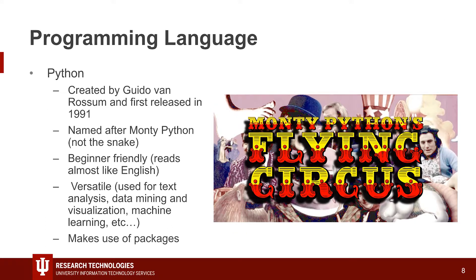Python was actually created by Guido van Rossum and first released in 1991, so it's been around for a while. It's on its third iteration — Python 3.7 is the most recent. It's actually named after Monty Python's Flying Circus, not the snake, even though they keep using the snake for the emblems. I actually like that it was Monty Python a lot better, so you might see another Monty Python slide later on.